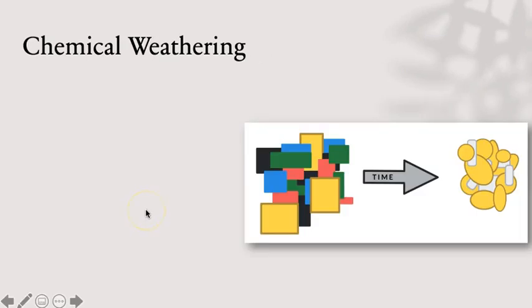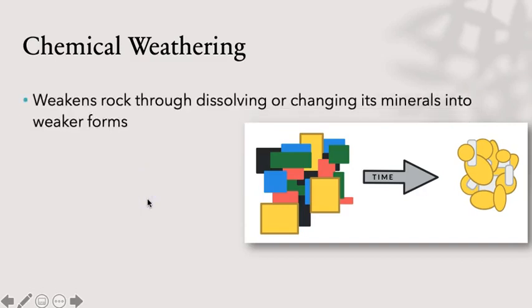In contrast, chemical weathering does change the composition of rock. This change in composition happens because of chemical reactions, which dissolve minerals or transform minerals from one type to another. These changes weaken the framework of the rock, causing it to break down.